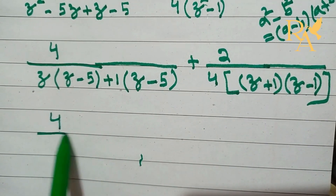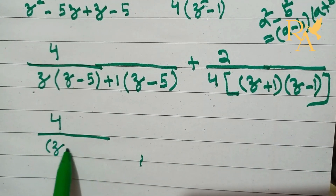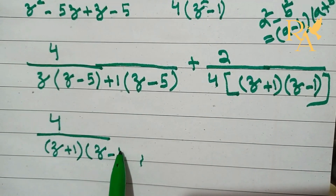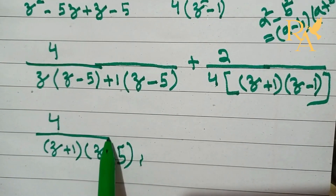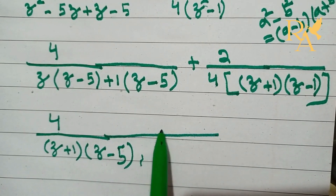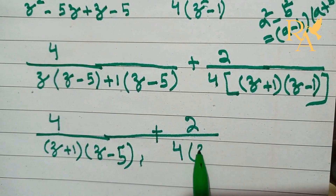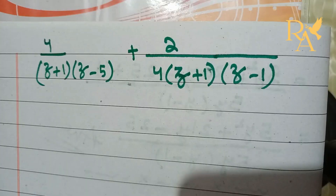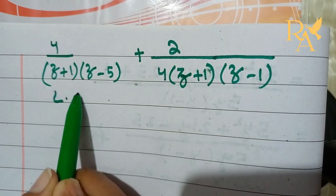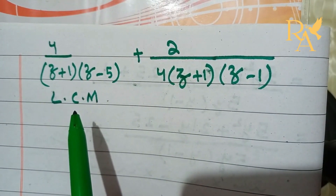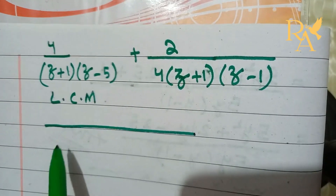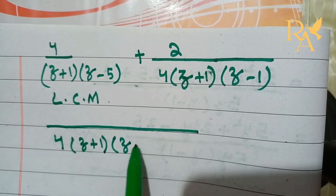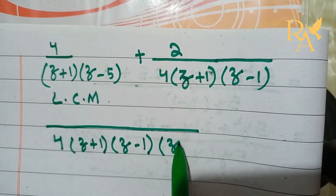So the expression becomes 4 upon z plus 1 and z minus 1, and z plus 1 and z minus 1. Now we will take the LCM. So here is 4, z plus 1, z minus 1, and z minus 5.